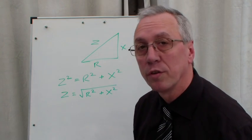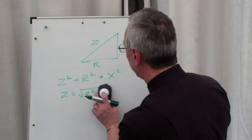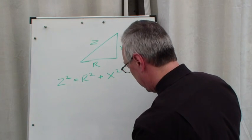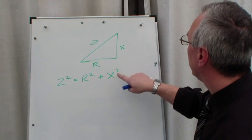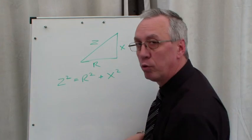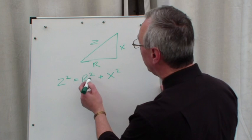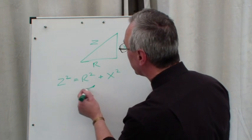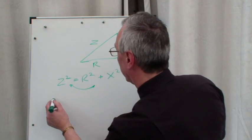If we just go back to that one, we want to get x on its own. We know from our second rule of transposition that we can just move that r² across the equal sign and it will become a minus.